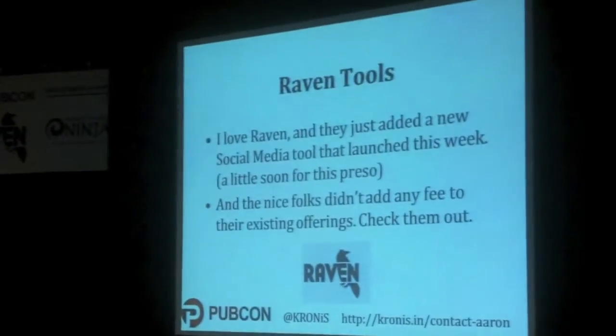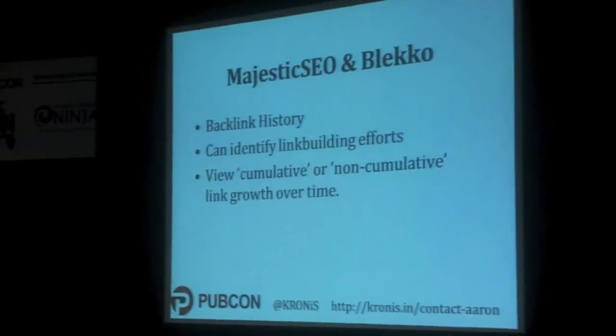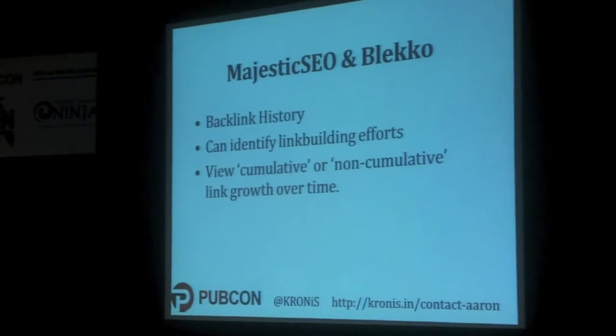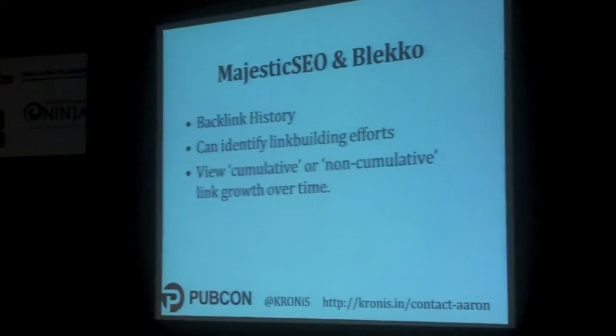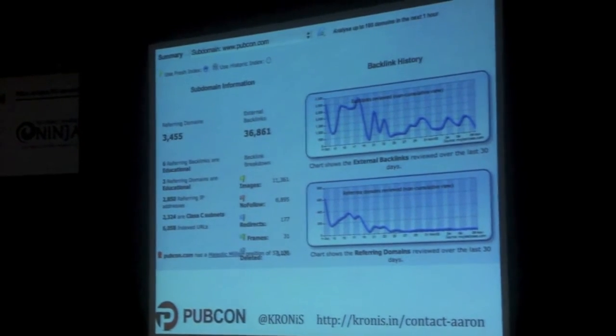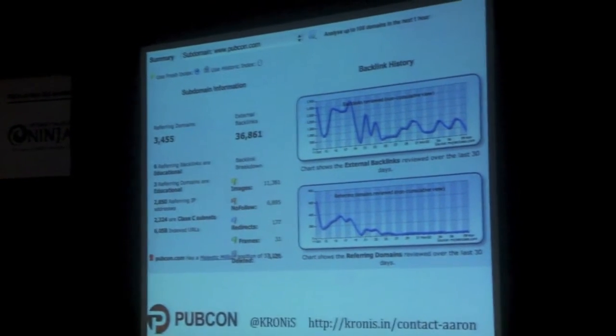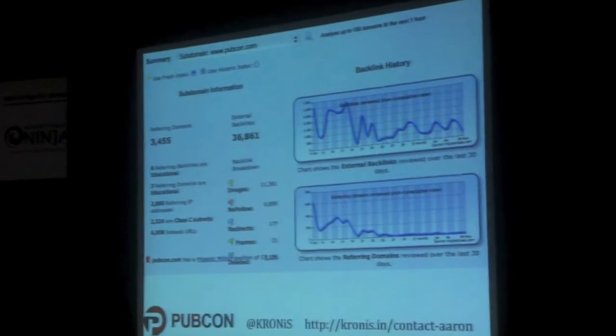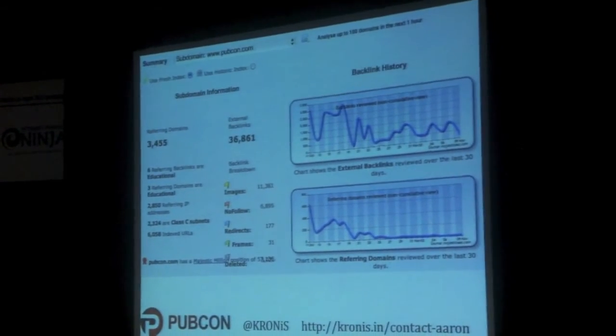Raven Tools — I love these guys. They just added a new social media tool launching this week. I wanted to give them a shout out. Majestic — use it for backlink history. You can identify link building efforts. You can look at cumulative or non-cumulative backlinks. Non-cumulative shows what's happening right now; cumulative continues to grow but counts all links you already have. Understand the difference between those two.